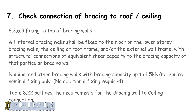Nominal and other bracing walls with bracing capacity up to 1.5 kN per metre only require nominal fixing, so you don't have to put any extra fixing in. Table 8.22 outlines the requirements for bracing walls to ceiling connection.